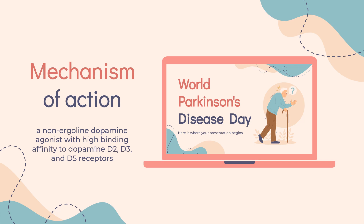Apomorphine is a non-ergoline dopamine agonist with high binding affinity to dopamine D2, D3, and D5 receptors. Stimulation of D2 receptors in the caudate putamen, a region of the brain responsible for locomotor control, may be responsible for apomorphine's action. However, the means by which the cellular effects of apomorphine treat hypomobility of Parkinson's remain unknown.